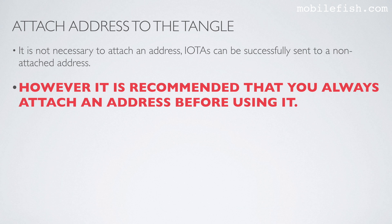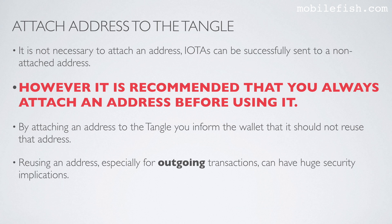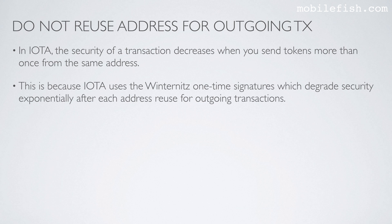However, it is recommended that you always attach an address before using it. By attaching an address to the Tangle, you inform the wallet that it should not reuse that address. Reusing an address, especially for outgoing transactions, can have huge security implications. In IOTA, the security of a transaction decreases when you send tokens more than once from the same address, because IOTA uses Winternitz one-time signatures, which degrades security exponentially after each address reused for outgoing transactions.